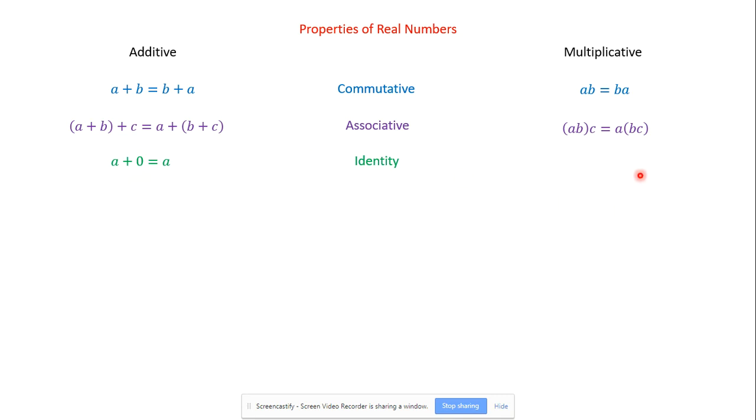Zero is the additive identity. What can you multiply to any number to keep the same thing? One. So one is the multiplicative identity.